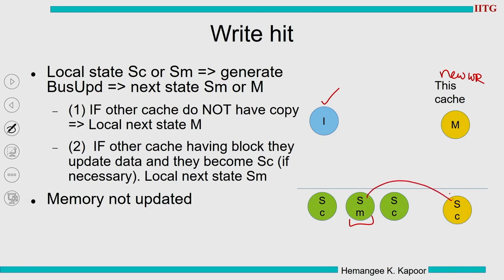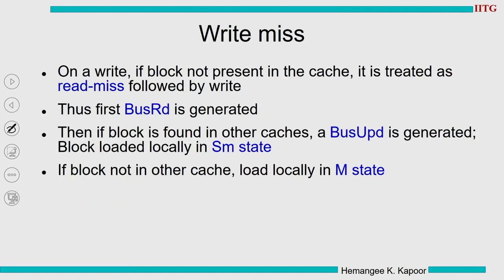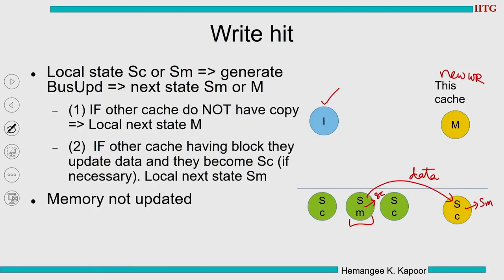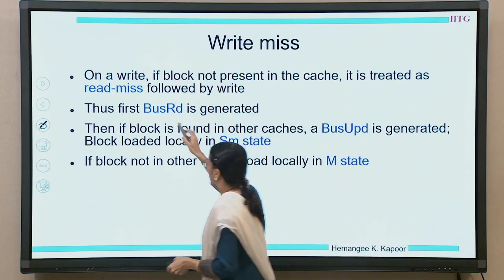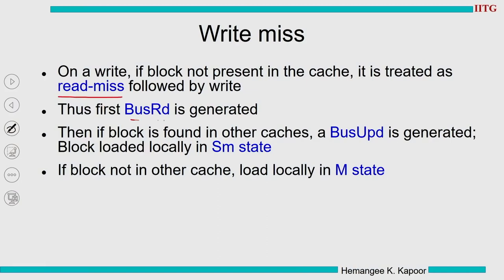If a new cache wants to write and others are in state I, it goes to M. If an SM exists, the SM first gives the data, the SM changes to SC, and the current cache changes to SM as the new most-recent writer. On a write miss: first treated as a read miss, then followed by a write. Send a bus read, acquire the data block, move to E or SC, then follow write-hit actions.